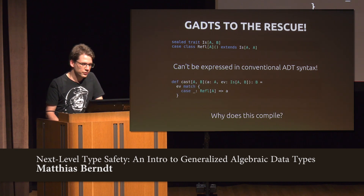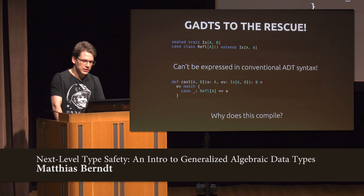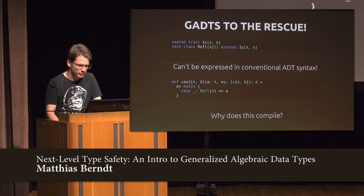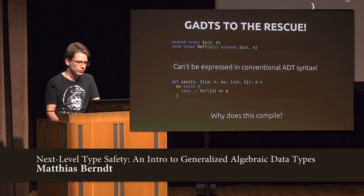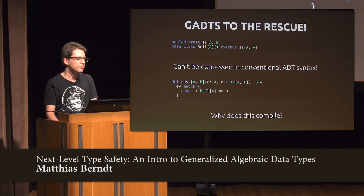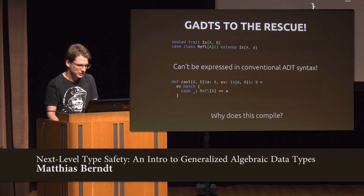Here's an example of how you can use that. The function takes a value of type A, a value of type Is[A, B], and returns a B. Inside the pattern match body, we return A. Why does that even compile? I said I would return a B, but A is of type A. The answer is that the Scala compiler is smart enough to figure out that if the evidence is actually of type Refl, then those two type parameters must be the same. As far as I'm aware, that is the only way to find out something about type parameters that are not previously constrained — after the pattern match, the compiler understands that.